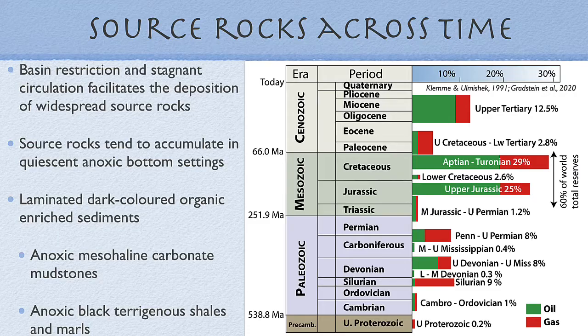But we are going to focus on carbonate source rocks. If we look at the distribution of source rocks over time, we can see a common factor: basin restriction, stagnant circulation, or anoxia. Both of these factors contribute to the deposition of large areas of oil and gas-prone source rocks, in both siliciclastic and carbonate settings. A common factor across the Phanerozoic is quiescent anoxic bottom conditions.